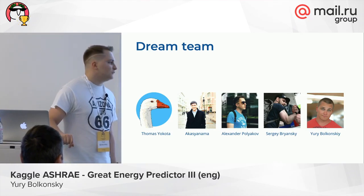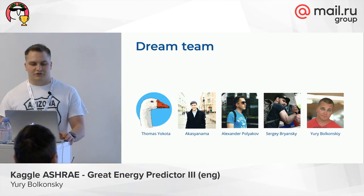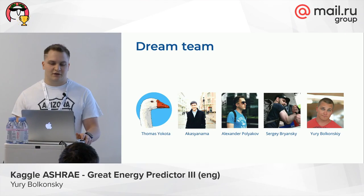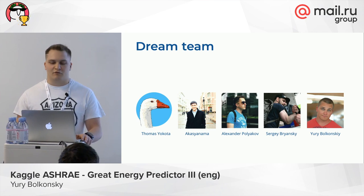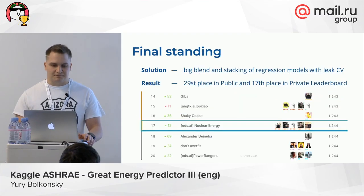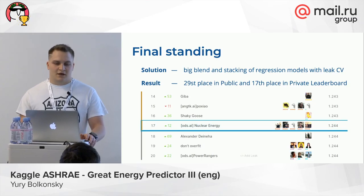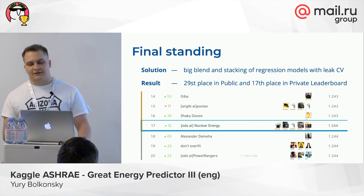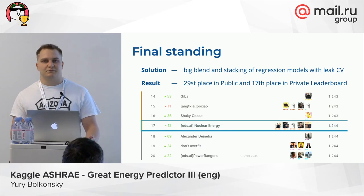I would like to introduce my team. It was Thomas Yokota from the United States, and all other participants are from Russia: Akasayama, Alexander Polikov, Sergei Bransky, and me. We finished this competition in the gold zone. Our solution was a big blend and stacking of regression models with league cross-validation, resulting in 29th place on the public leaderboard and 17th place on the private leaderboard.